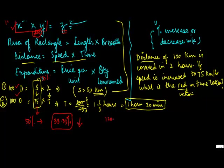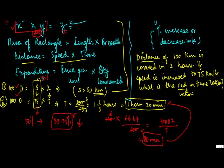Right? So if the earlier time was 120 minutes, then the new time will be 66.67 upon 100. Why? Because there is a decrease of 33.13%. This gives you 80 minutes, which is nothing but 1 hour, 20 minutes.